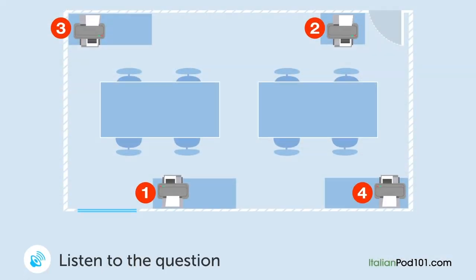A man and a woman are talking about the office printers. [Question: Where is the old printer?] "Where should we put the new printer?" "I think we should put it where the old printer is now. But the old one still works — we'll keep using it." "Ok, then we can't put the new one there." "It would be better to put the new one on the shelf next to the door, but there's only space for one printer." "Ok, then I think we should put it on the other side of the room. Right — what about next to the window?" "Fine."